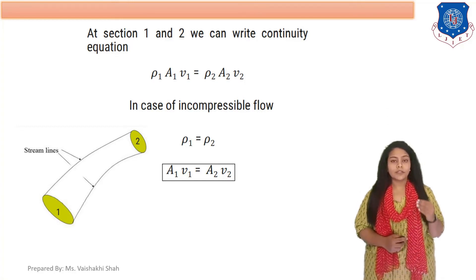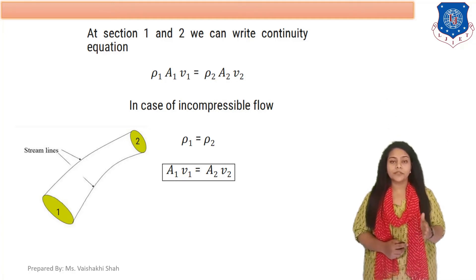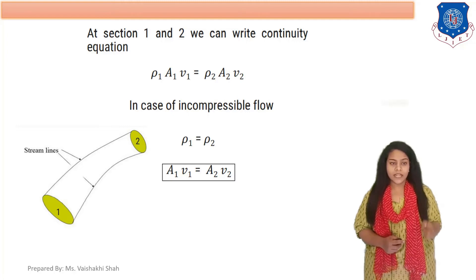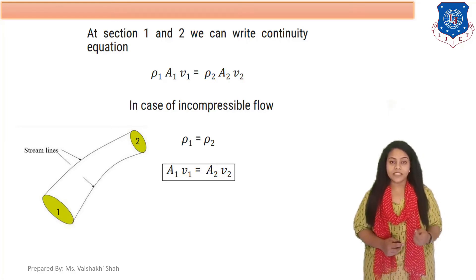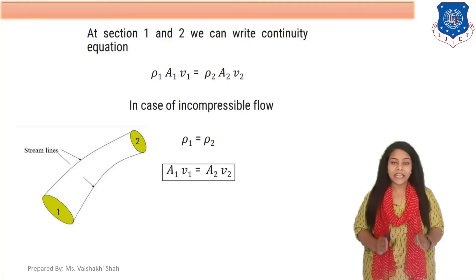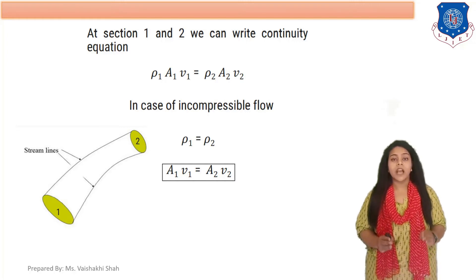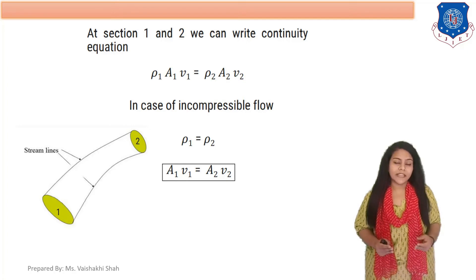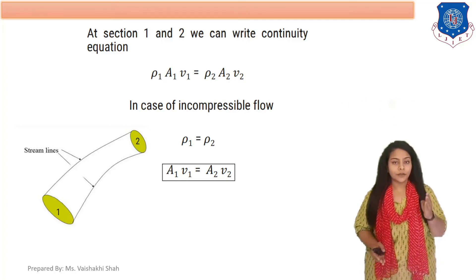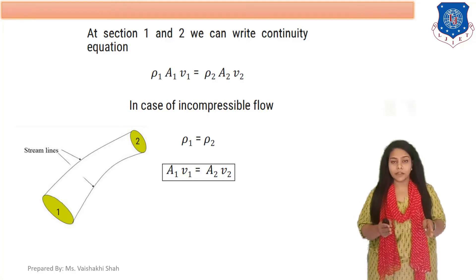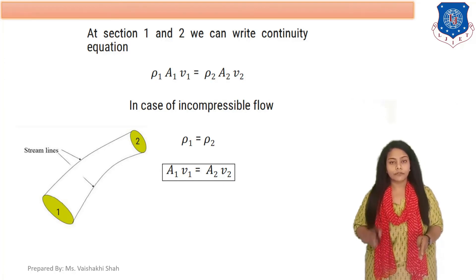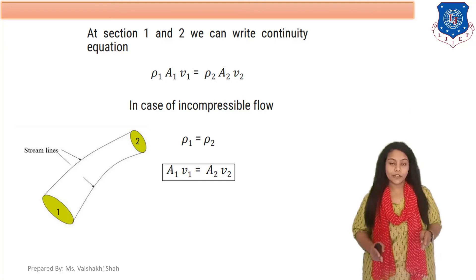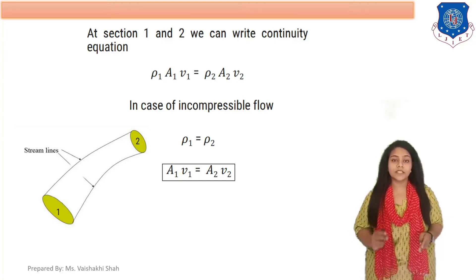Applying the continuity equation at Sections 1 and 2 using the law of conservation of mass, the mass of fluid entering at Section 1 is ρ₁·A₁·V₁, where ρ₁ is the density, A₁ is the area, and V₁ is the velocity at Section 1. This equals ρ₂·A₂·V₂ at the outlet, where ρ₂ is the density, A₂ is the area, and V₂ is the velocity at Section 2.